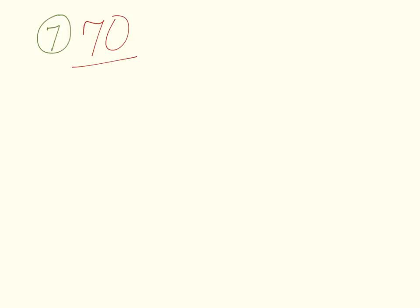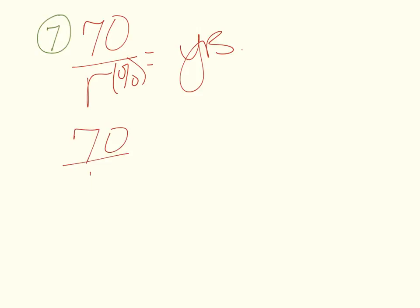Number seven: Libya is doubling its population every 19 years. What's the growth rate? Using 70 over r equals doubling time in years — r always comes out as a percentage. We're given the years but not r, our growth rate, so it's 19 years.